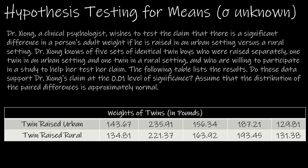For our second question, Dr. Zhang, a clinical psychologist, wishes to test the claim that there is a significant difference in a person's adult weight if raised in an urban versus a rural setting. Dr. Zhang knows five sets of identical twin boys who were raised separately — one in an urban setting and one in a rural setting — and who are willing to participate. This is paired data because they are twins: same mother, same father, same genetics, so there is a relationship between the weights.